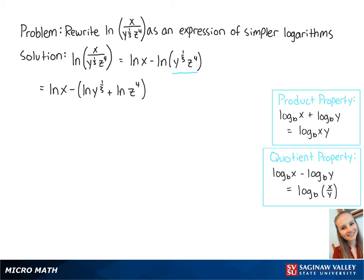Since the original ln is negative, notice that the minus sign is going to distribute to both of the logs. So this becomes the ln of x minus the ln of y to the 1/3rd power minus the ln of z to the 4th power.